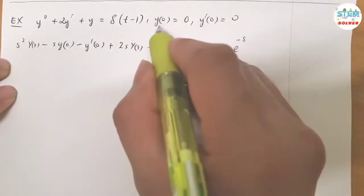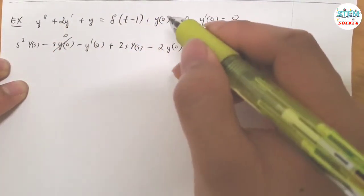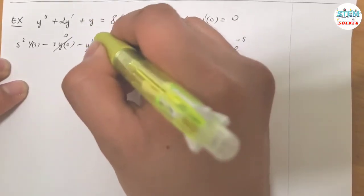Now look at the conditions. Y of 0 equals 0, this is gone, this is gone. Y prime of 0 equals 0, so this is gone as well.